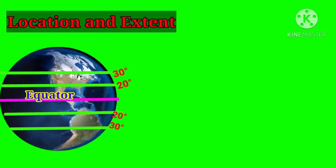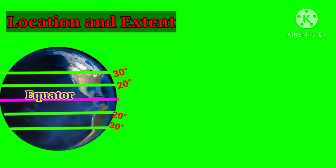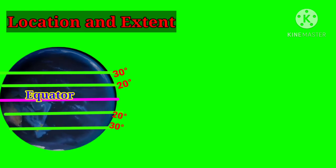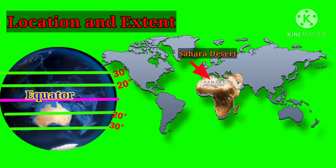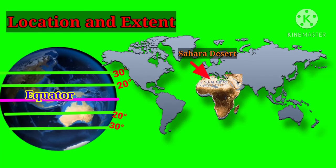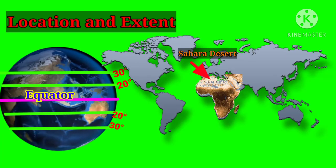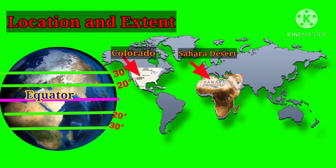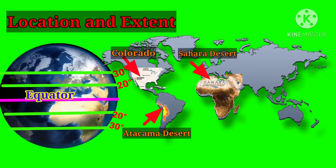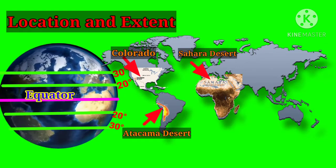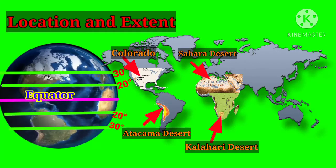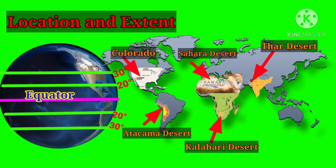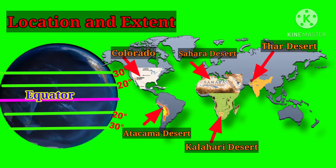Hot desert regions — location and extent: Hot deserts are located between 20 degrees and 30 degrees north and south parallels in the western parts of continents. The Sahara Desert is in northern Africa, the Colorado Desert in North America, the Atacama Desert in South America, the Kalahari Desert in South Africa, and the Thar Desert in Asia.